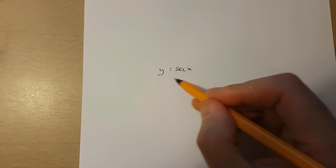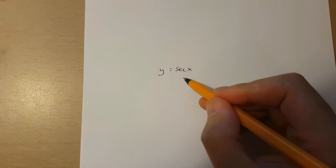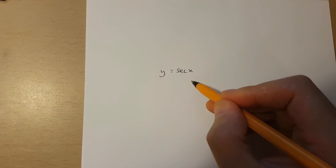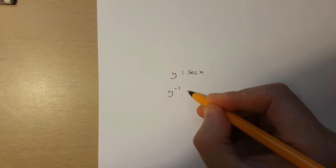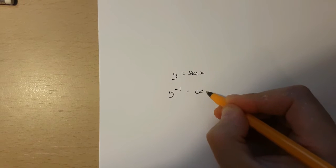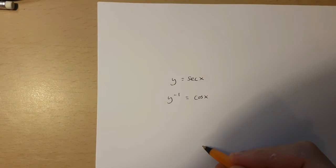Now the first thing I'm going to do over here is take the inverse of both sides of this equation. If I do this, I get y to the power of minus 1 is equal to cos x.